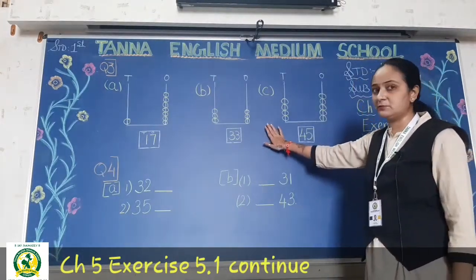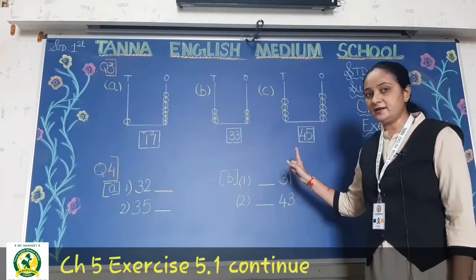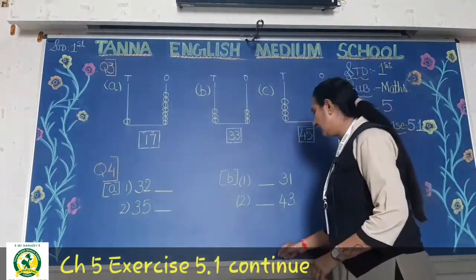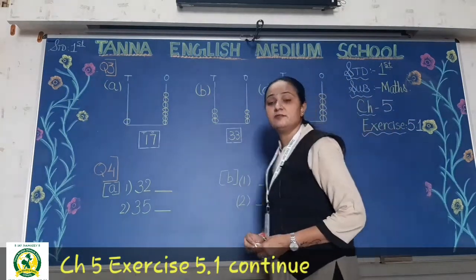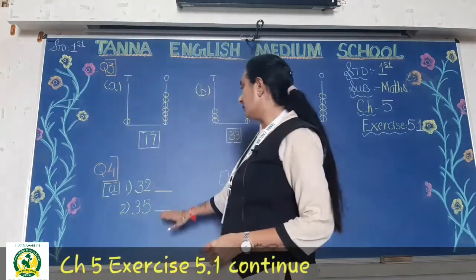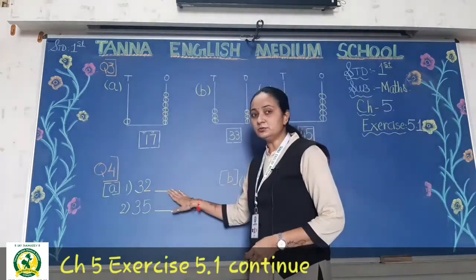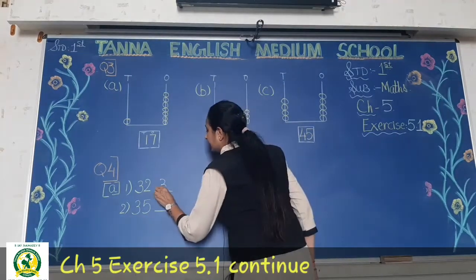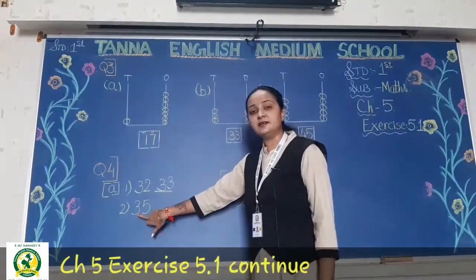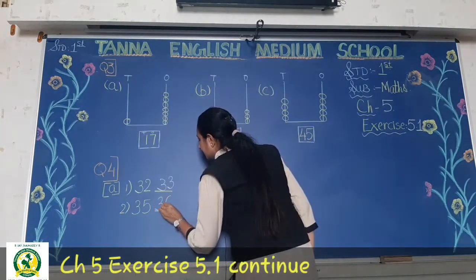So question number 3 you have understood, question number 2 you have understood as well. Very good. Now we will do question number 4. What is written in question number 4A? What comes after? So here you have to write the number that comes after. What will come after 32? 33. So you will write here 33. And what will come after 35? Yes, 36. So you will write here 36.